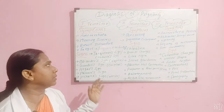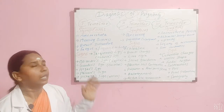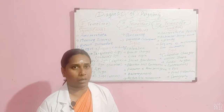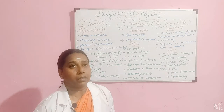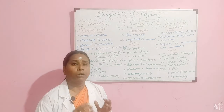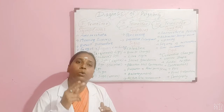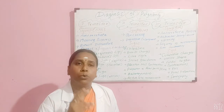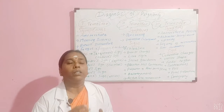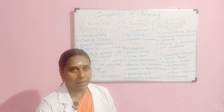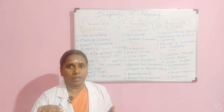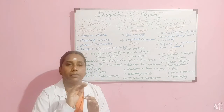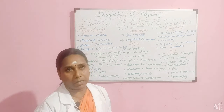That is called the vaginal sign or Oseander sign. Then we have the Goodell sign, also called the cervical sign — your examiner may ask either name. It is the softening of the cervix: on pervaginal examination, the cervix feels very soft, like your lips when you close your eyes and touch them. You feel the cervical area in the same soft way.